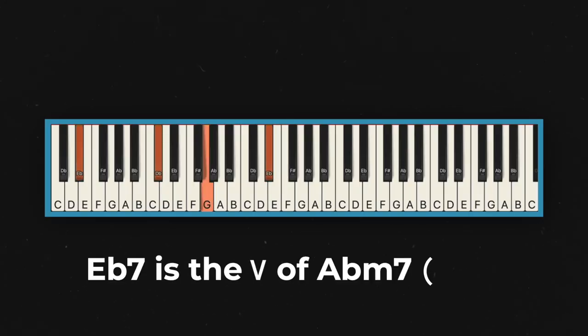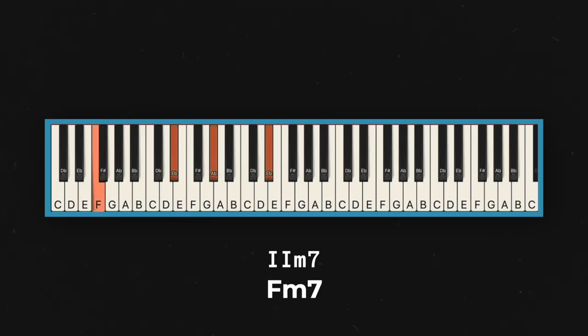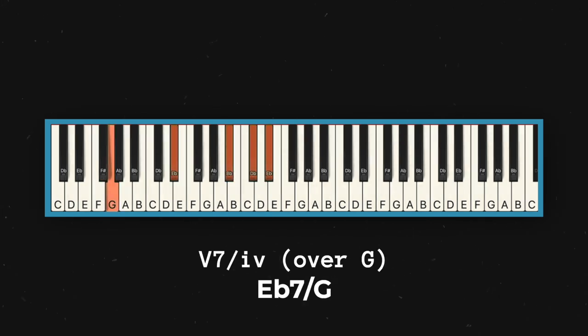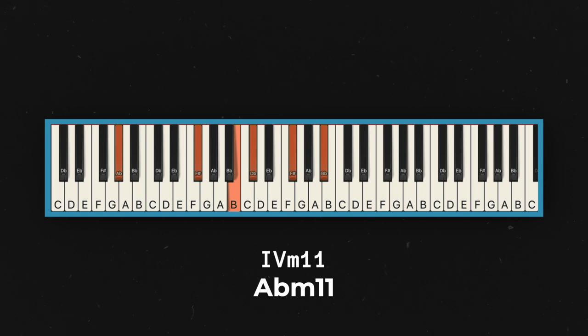Now in the 3rd repeat, we go from the Db add 9 to Eb7 — not Eb minor. The Eb7 kicks off that gospel walk-up which I love so much. Now let's analyze it: the Eb7 is the 5 of Ab minor 7 — that's a secondary dominant. Then we go to the 2 chord, F minor 7. Then the b3 diminished 7th chord, which is Gb diminished 7, which leads us right up into Eb7 over G. Again, that Eb7 is the 5 of 4, the 5 of Ab minor. And then finally we resolve to Ab minor 11.